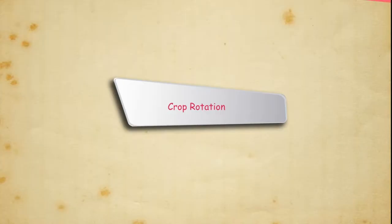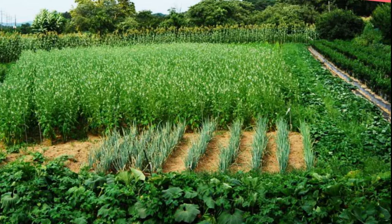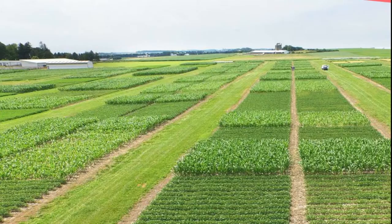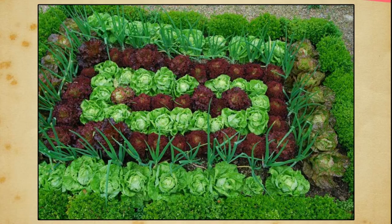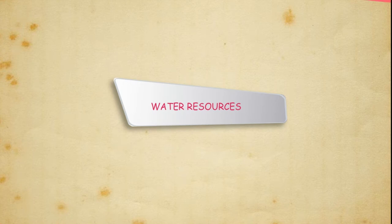Crop rotation is a practice in which different crops are grown in systematic succession. It adds nutrients to the soil and helps in pest control. Another effective method of soil conservation is afforestation, or planting of trees on a large scale, which reduces wind speed and free flow of water, thus stopping soil from being carried away. Use of eco-friendly fertilizers and planting of indigenous trees and shrubs are also significantly helpful in soil conservation.